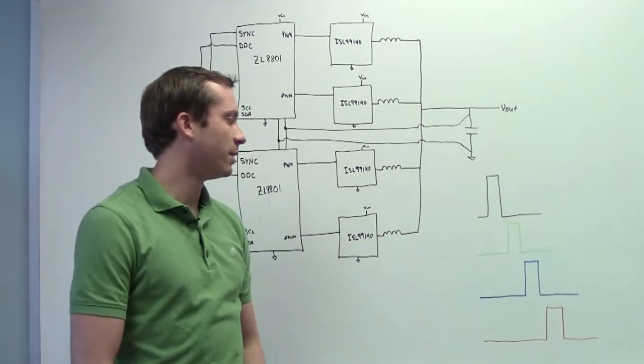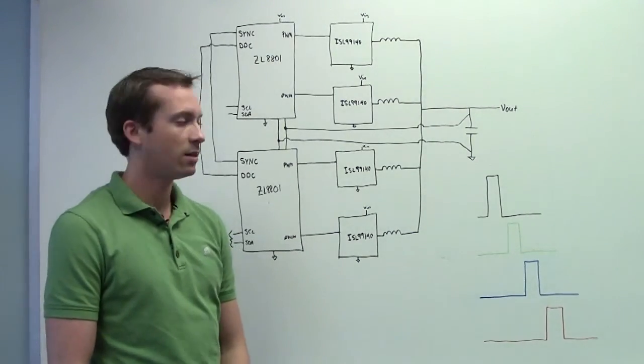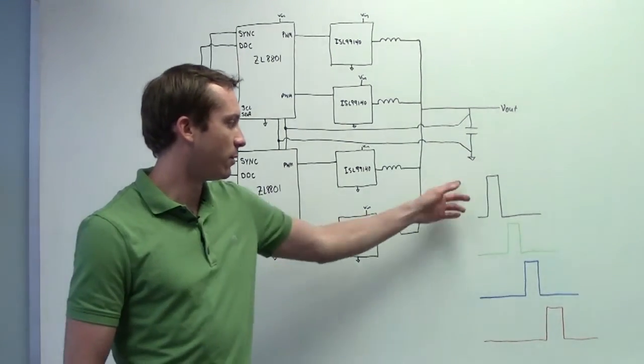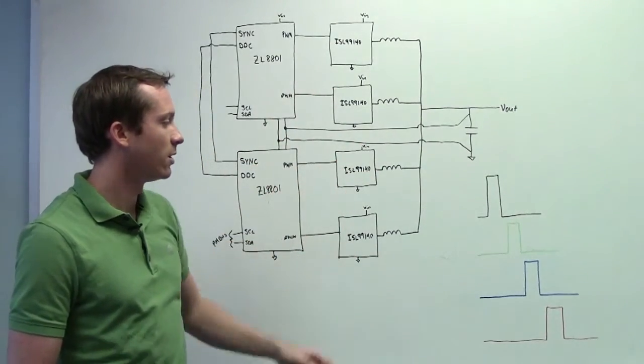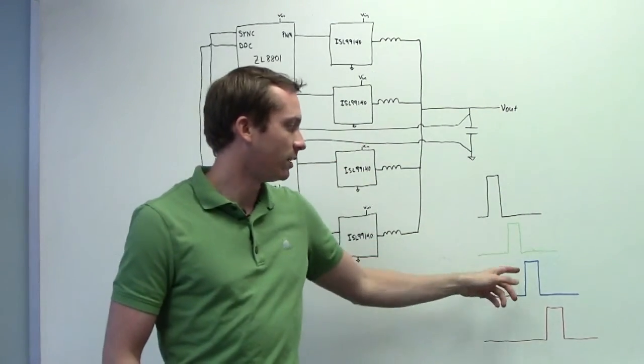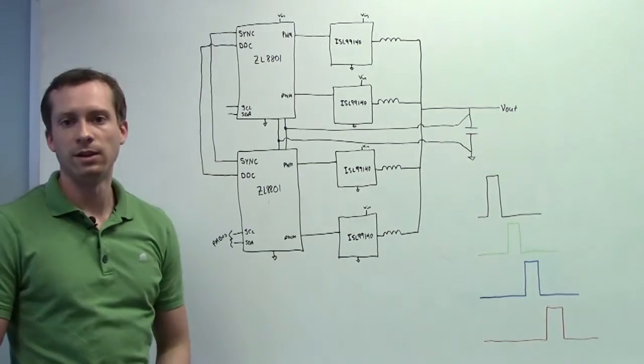In the corner here, I'm showing what interleave is. So in this case, I've got four phases. This would be the four phases, one from each controller, and they're all interleaved and separated by 90-degree increments.